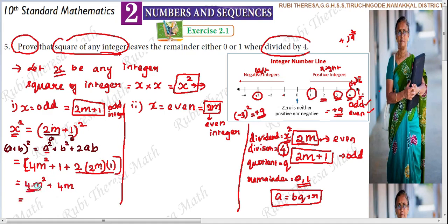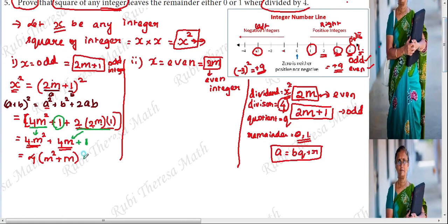So x squared equals 4m² + 4m + 1. Taking 4 as common from the first two terms: x squared equals 4(m² + m) + 1. This is now in the format of Euclid's Division Lemma: a = bq + r, where the divisor b is 4, the quotient q is (m² + m), and the remainder r is 1.